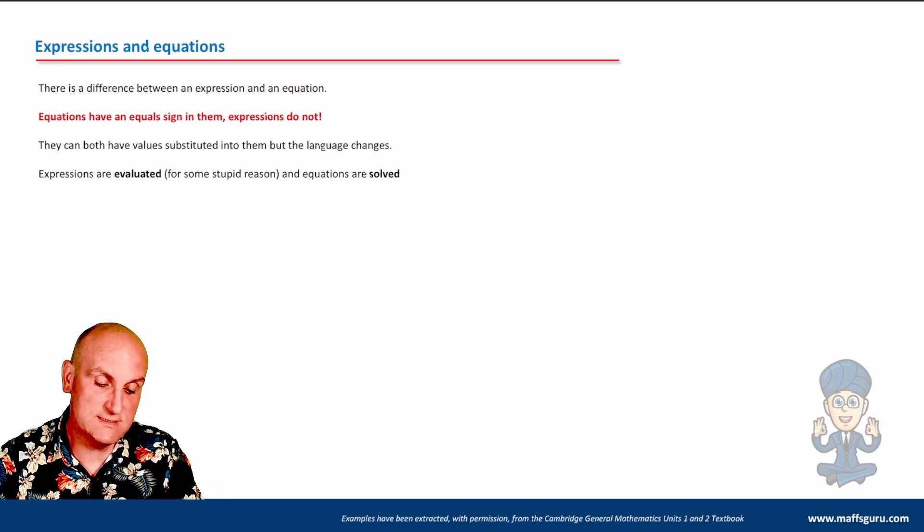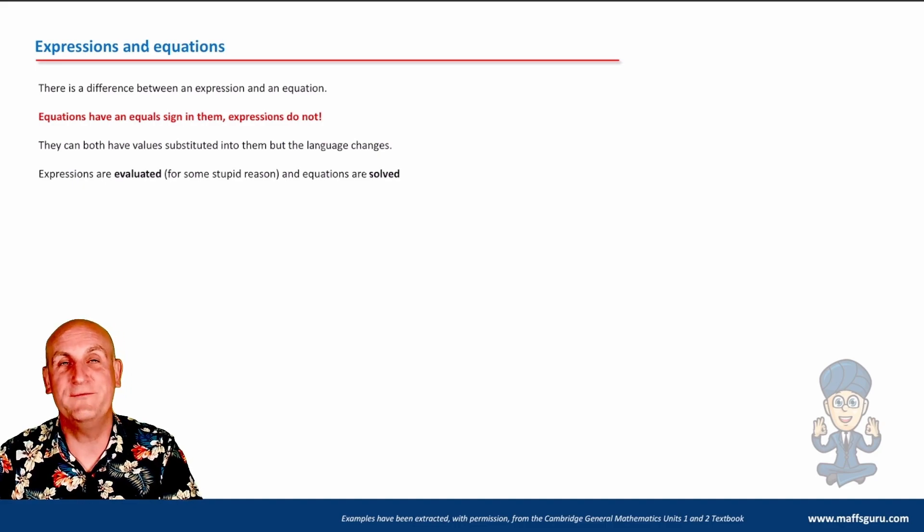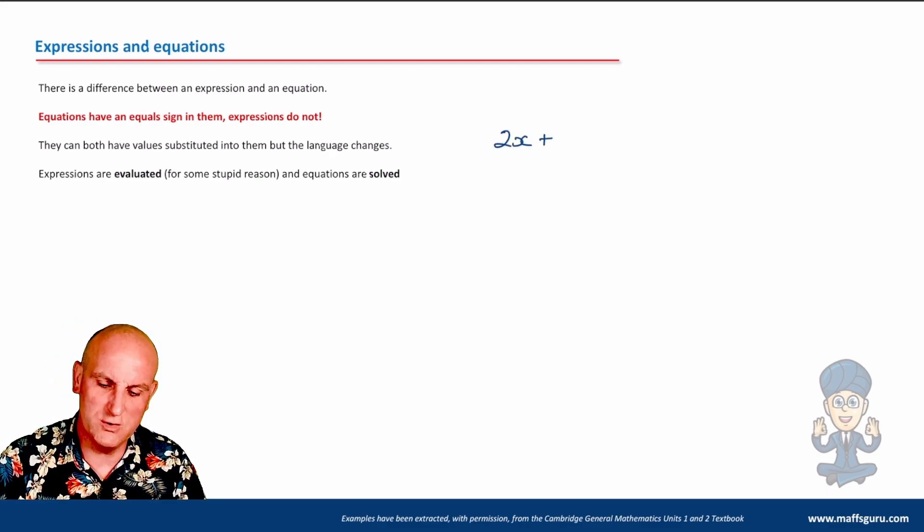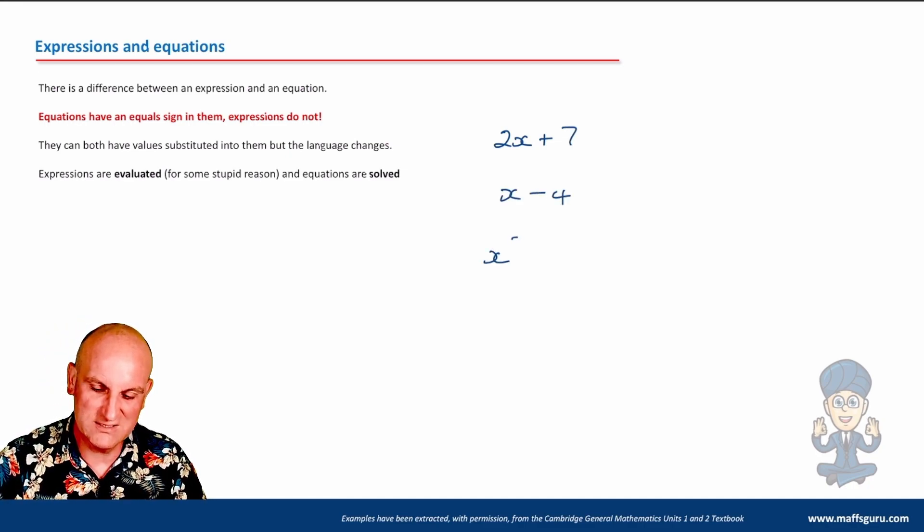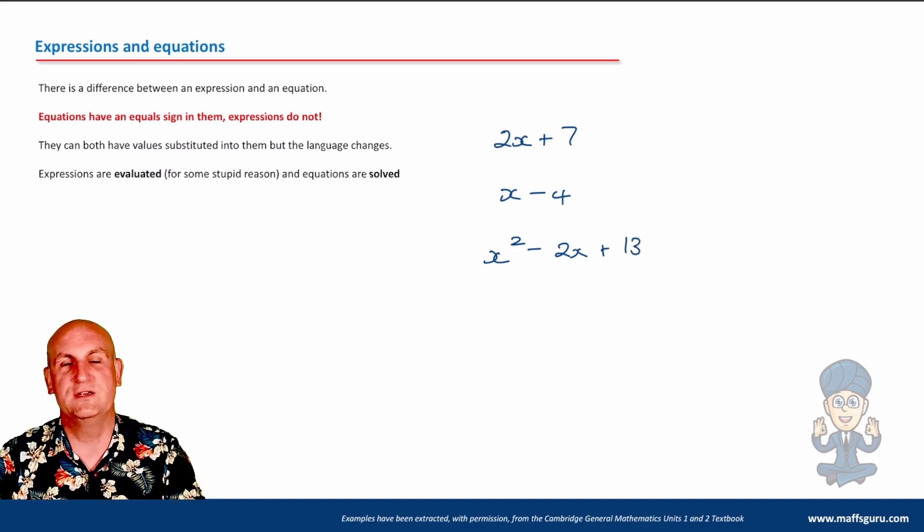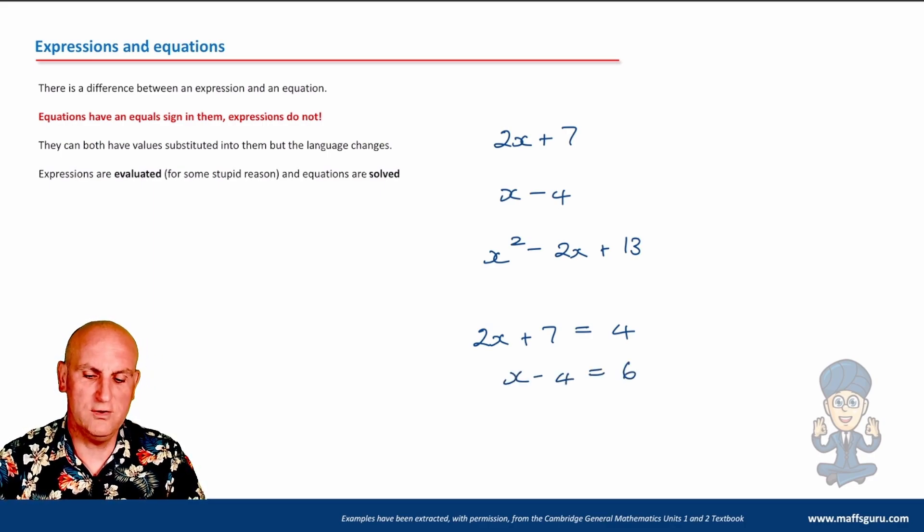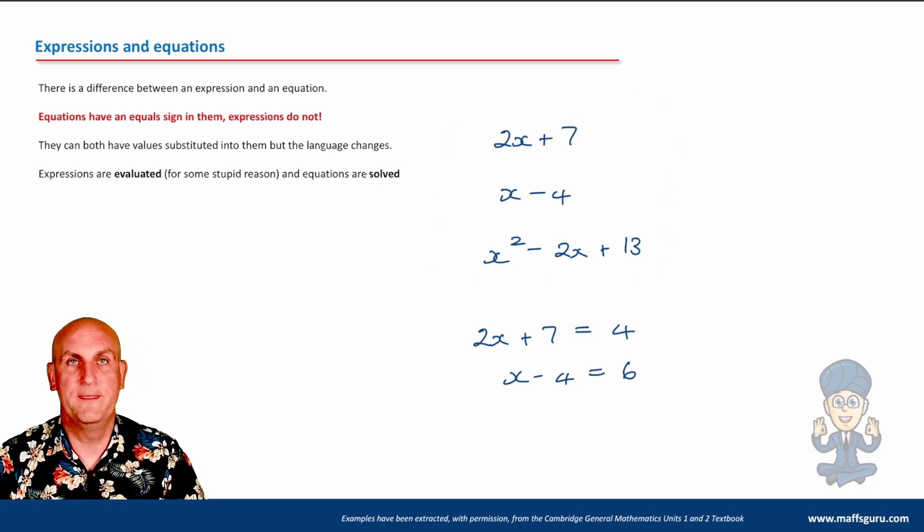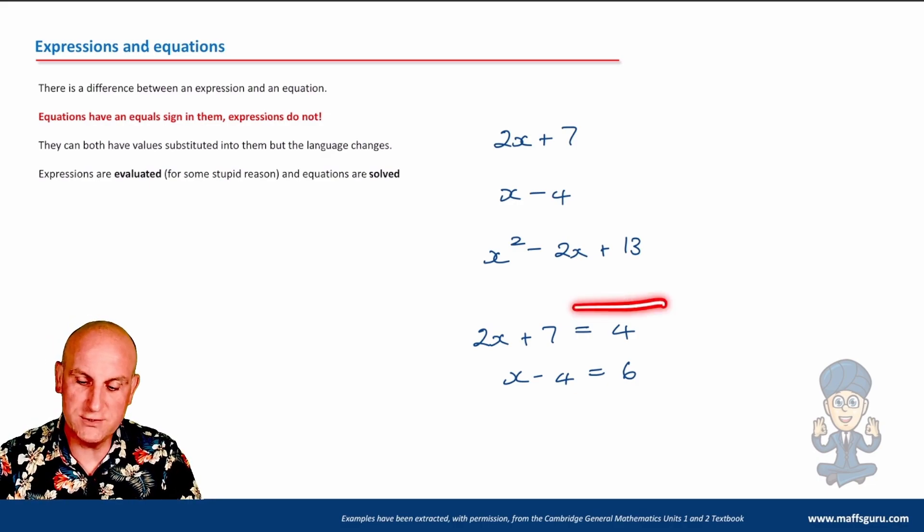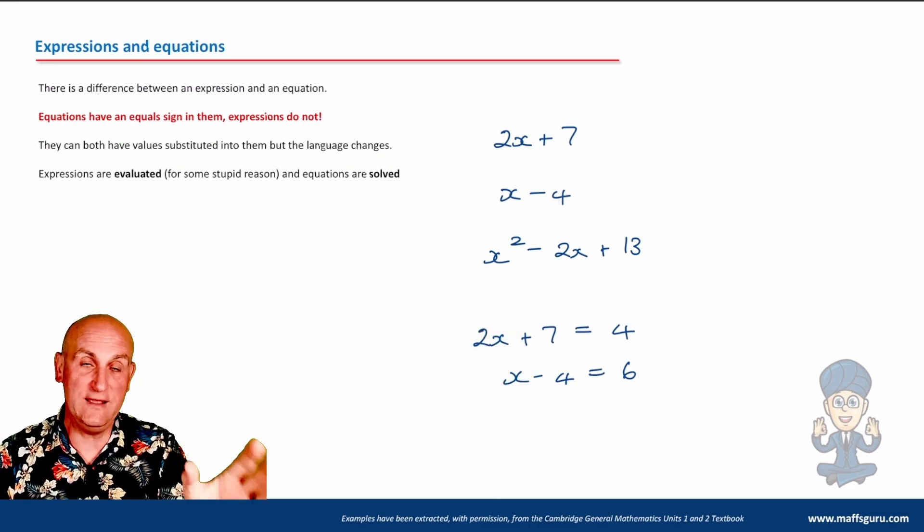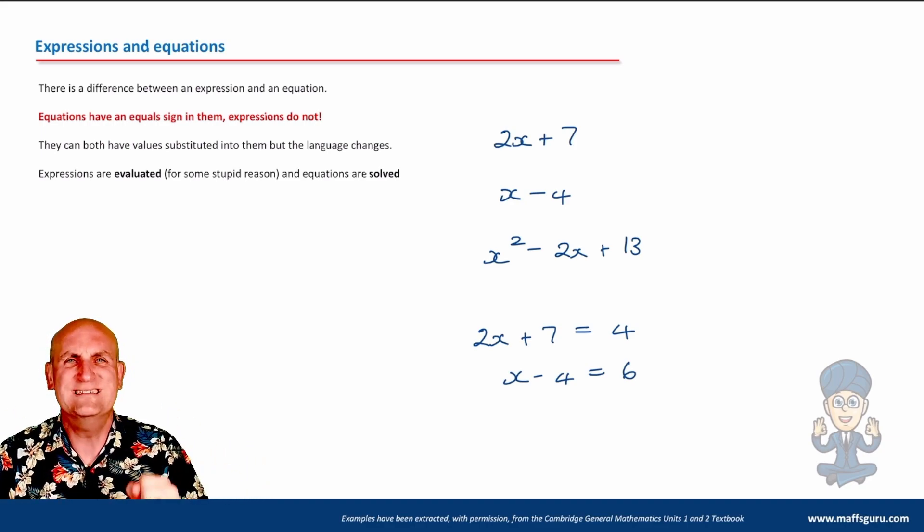Something else that's really important in maths is to understand the difference between an expression and an equation. An expression is basically something like 2X plus 7. X minus 4. X squared minus 2X plus 13. Those are all expressions. Let me show you an equation. 2X plus 7 equals 4. X minus 4 equals 6. None of these here have an equal sign in it. So if it doesn't have an equal sign in, it's called an expression. Equations always have equal signs.